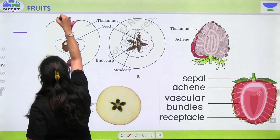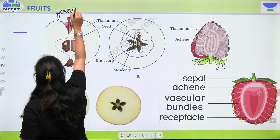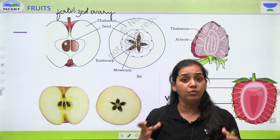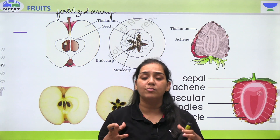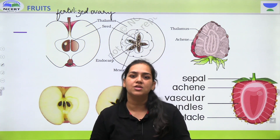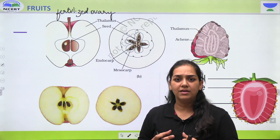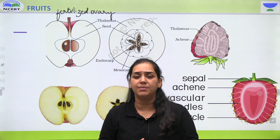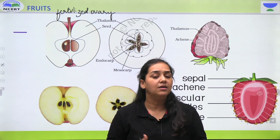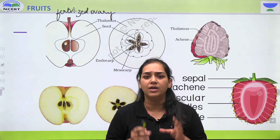Fruit ko hum normally fertilized ovary bulaate hai. After fertilization, that is double fertilization, jab ovary transform hota hai fruit ke taraf, toh usko hum fruit bulaate hai. As the name suggests, kya kya changes hoti hai andar? Seed jo formation hua hoga woh hua hoga ovule se. Toh jab ek fruit ban raha hai, toh normally uske andar seeds bhi banti hai jo derive hoti hai ovule se. Jo ovary tha woh ban gaya fruit. Aur iske chalte jo flowers mein sepals the, petals the, jo stamen the, woh sare gir chuke honge in most of the cases.